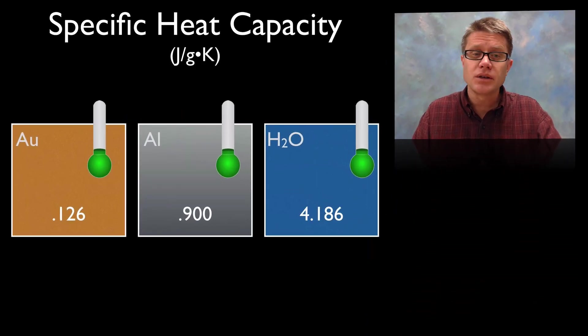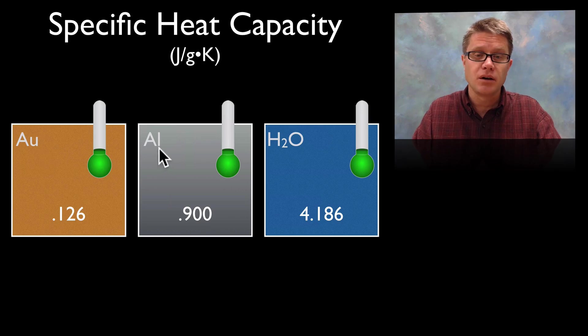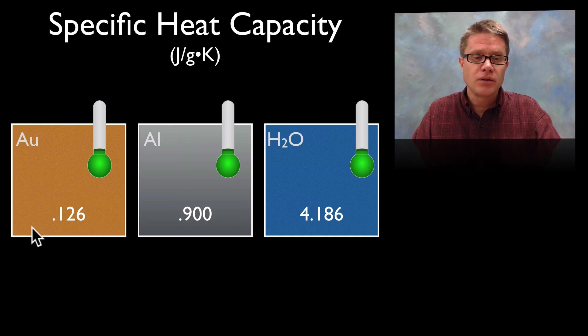Now it's not the same for every substance. And so we use a term called specific heat capacity to measure that. And so right here you could imagine we have a kilogram of gold, a kilogram of aluminum and a kilogram of water. And let's say that they're all in a container. And so if you look at it they're going to have different amounts of specific heat capacity.